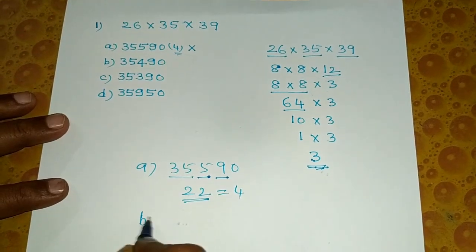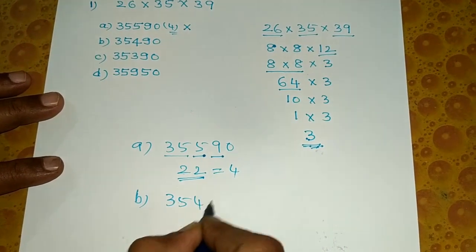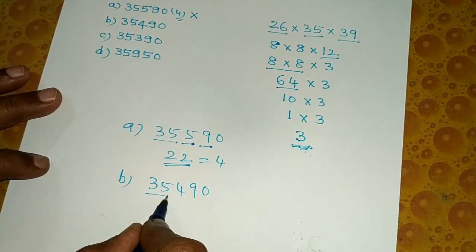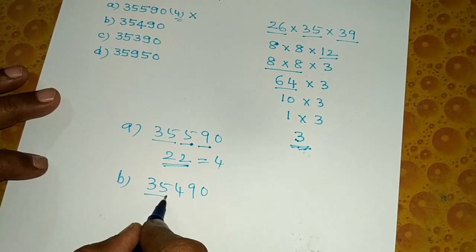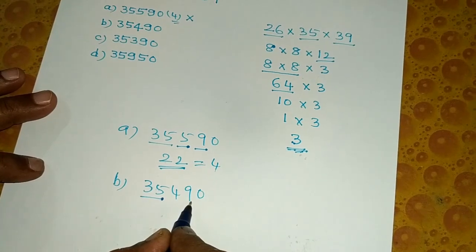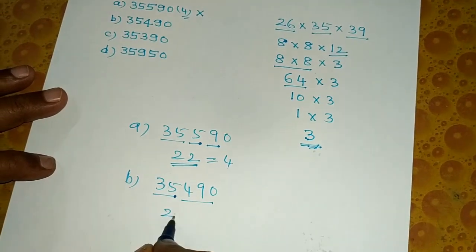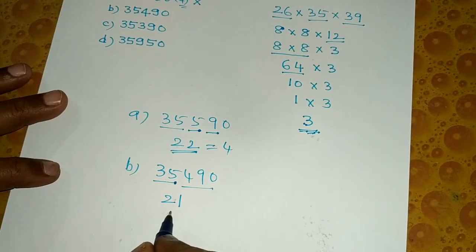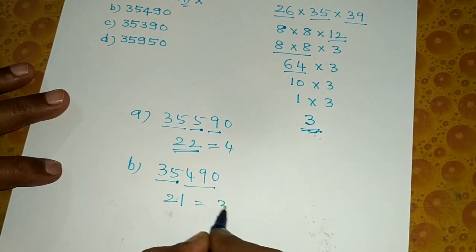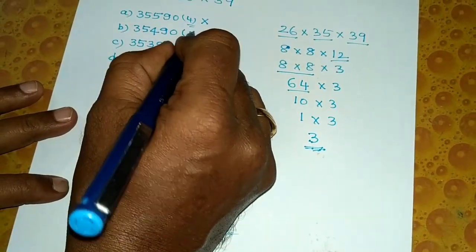Next, option B answer is 3, 5, 4, 9, 0. Add 3 plus 5 equals 8, plus 4 equals 12, plus 9 equals 21. Now let's see: the digit sum answer is 3. This answer is 3.